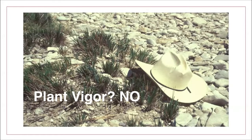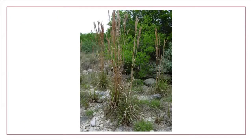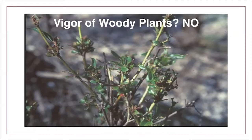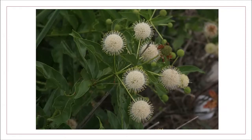Since this colonizer is not being allowed to grow and do its job of trapping early sediment, it will be difficult for stabilizing plants to follow. This is how a vigorous, healthy bushy bluestem plant should look. Pictured here is a heavily browsed button bush, an obligate with a stability rating of 8, but its stabilizing function is being impaired by over-browsing. This is what a healthy, vigorous button bush should look like.